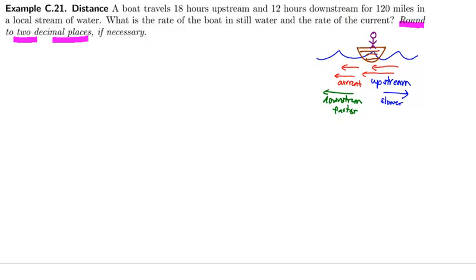So let's go ahead and let the rate R be the rate of the boat in still water, and C be the rate of the current. Since this is giving us time, distance, they want us to find rate, we're going to use the formula rate times time equals distance.